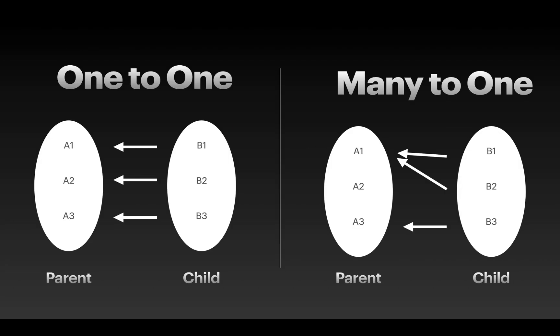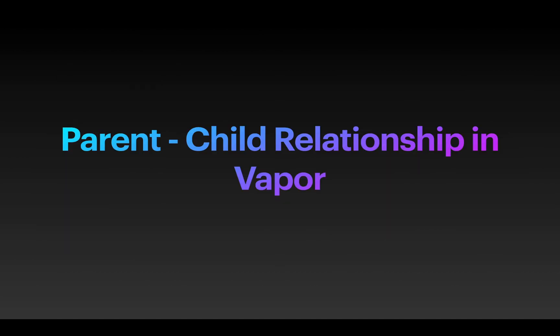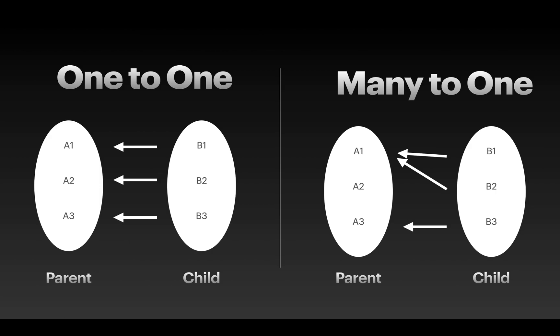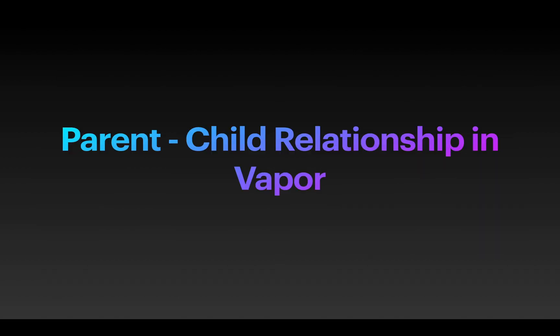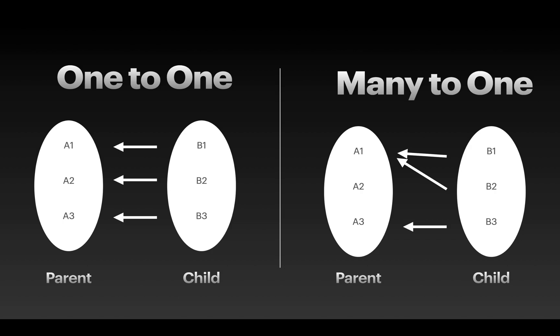First, let's talk about parent-child relationships. Parent-child relationships describe a relationship where one model has ownership of one or more models. These are also known as one-to-one or many-to-one relationships. For instance, if you model the relationship between people and pets, one person can have one or more pets, but a pet can only ever have one owner.